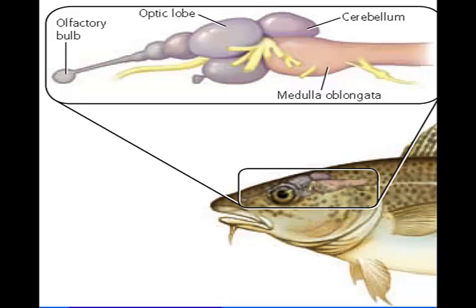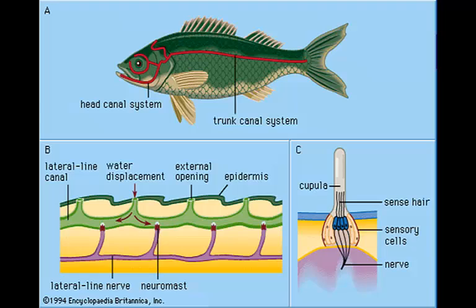Fish have highly developed brains and nervous systems. The most anterior part of the fish's brain contains the olfactory bulb, which leads to the optic lobe. The optic lobe processes information from the eyes. Then we see the cerebellum, which coordinates body movements, and then the medulla oblongata, which controls the internal balance of the fish. Most fish have superbly designed sense organs; fish like trout and salmon, which are active in daylight, have well-developed eyes and color vision, as well as extraordinary senses of taste and smell.